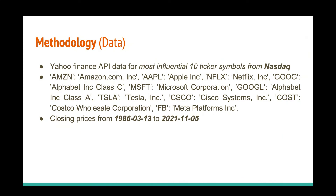This is the data portion of my methodology. I used Yahoo Finance API data for the 10 most influential tickers from NASDAQ: Amazon, Apple, Netflix, Google, Microsoft, Tesla, CSCO, Costco Wholesale Corporation, and FB (Meta Platforms). I used closing prices with a data range from 13 March 1986 to 5 November 2021 — a very long range dataset. Though challenging, most cases considered 5 to 10 years of data, but I took this much range to make the model as robust as possible and build confidence that it performs better than other models.